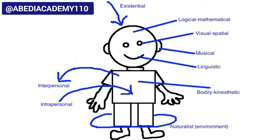Then we have intrapersonal intelligence, which deals with how you have a relationship with yourself. Then we have naturalistic intelligence — a person who recognizes and understands the environment more possesses that type of intelligence.